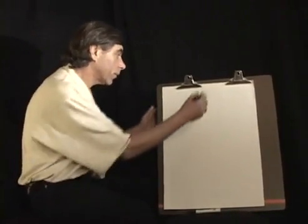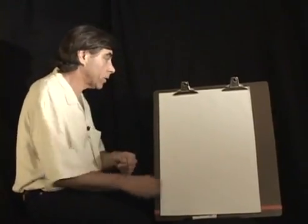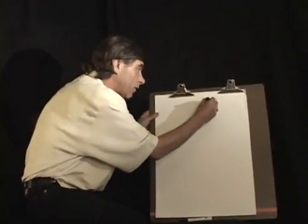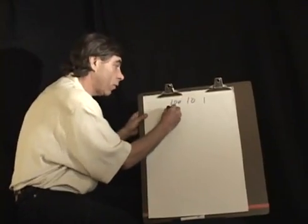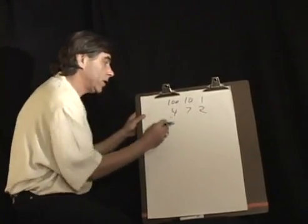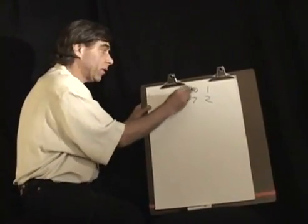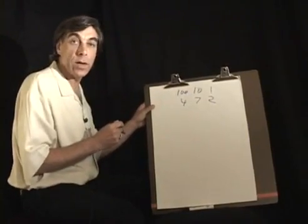Today, when we write a number, we work in powers of 10 and place value. We have the 1s, the 10s, the 100s columns, so if you wanted to say 472, we're really saying 4 100s, 7 10s, plus 2 1s.